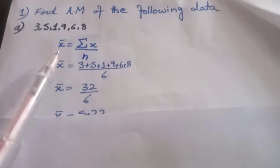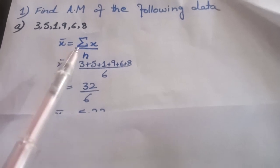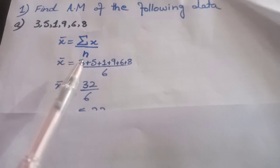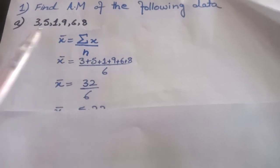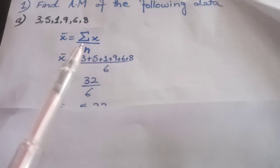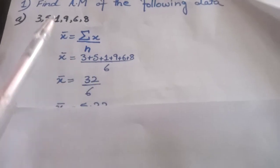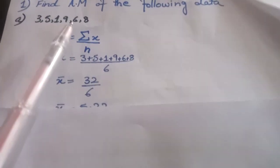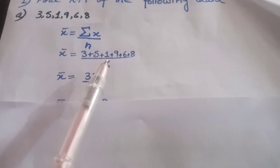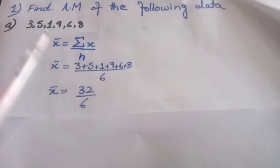For ungrouped data, we will calculate arithmetic mean by adding all the given observations and dividing by the total number of observations. We will use summation X for the sum. Whatever data we have, we will sum it up and add it, then divide by the total number of observations.